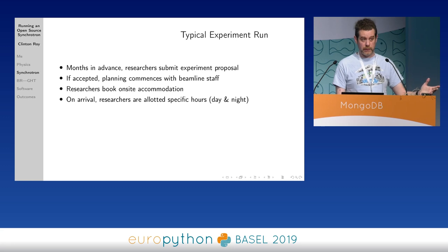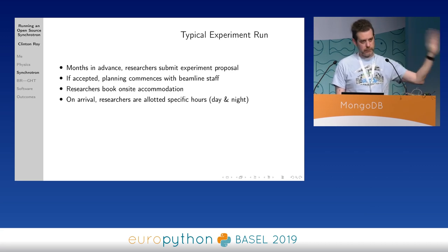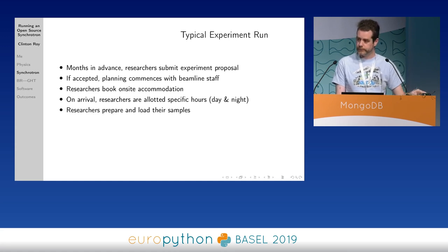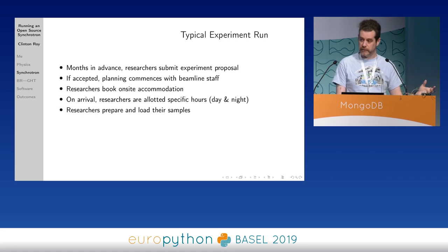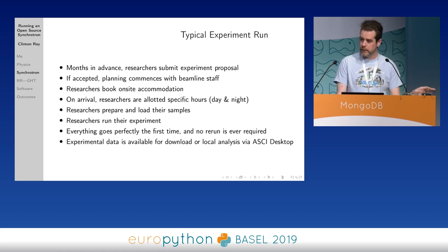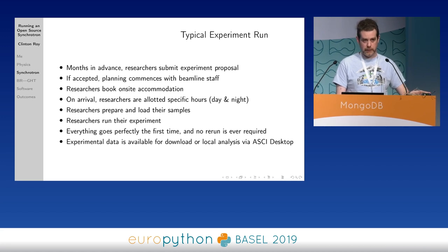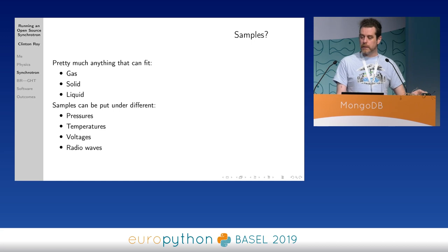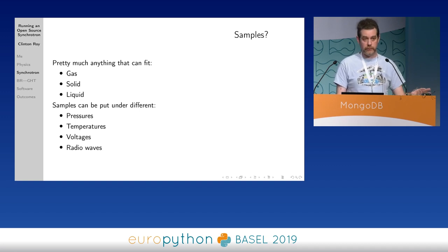We have on-site accommodation at the synchrotron because it's a 24-hour facility. When you arrive you'll get allotted specific hours - it could be like three o'clock to six o'clock, so you want to be able to roll out of bed and show up. Once on site, depending on the type of samples, they might do chemical or physical work to prepare the samples. You run your experiment, everything goes perfectly, and the researchers get exactly the data they were looking for the first time - they don't have to rerun their experiments. We then keep all that experimental data on site as the canonical location for five to ten years, depending on the beamline and how much data you've got. The samples can be pretty much anything - we have specific holders for gases, solids and liquids.